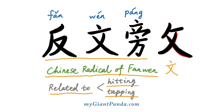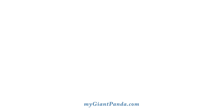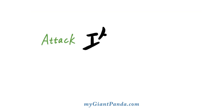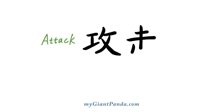那下面我们就具体看一下一些含有反文旁的中文汉字是怎么写的。首先我们第一个要写的是攻击 (attack)。攻,进攻的攻,左边是一个工人的工,右边是一个反文旁。攻击的击:两横,第一横很短,第二横很长,一竖,然后是竖折、竖,这是一个击。